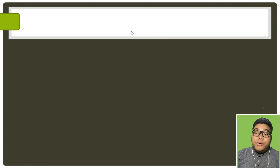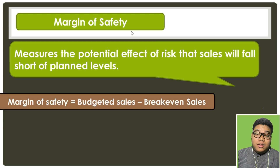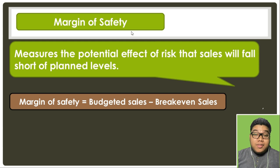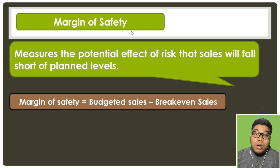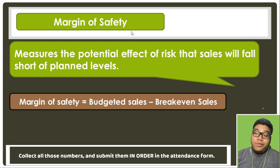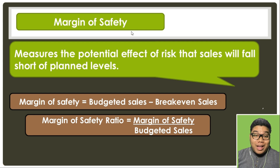Now let's proceed with margin of safety. Margin of safety measures the potential effect of risk that sales will fall short of planned levels. Margin of safety is a test of risk — the higher your margin of safety, the better, because this shows how far you are from break-even sales. The formula is: margin of safety equals budgeted sales minus break-even sales. For the ratio, divide margin of safety in pesos by budgeted sales.